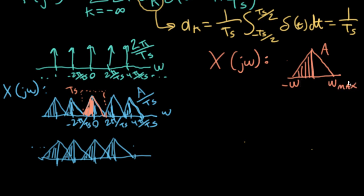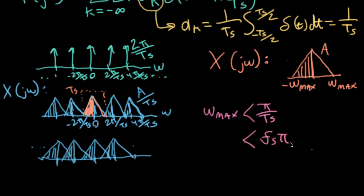Technically, all of the frequencies in the signal must be less than omega max. We see that the edge of the triangle, which is at omega max, needs to be less than π over TS. If I want to do this in terms of Hertz, I could write FS times π.